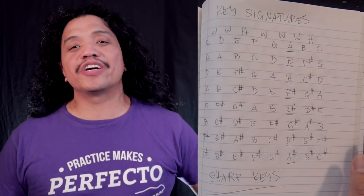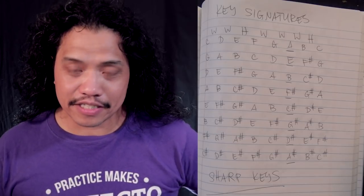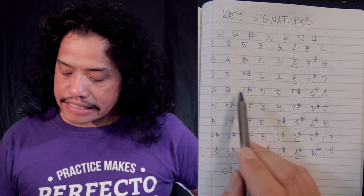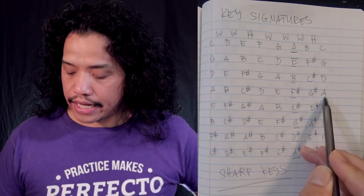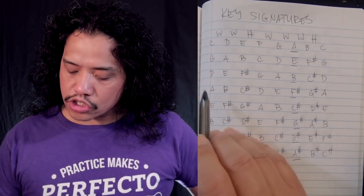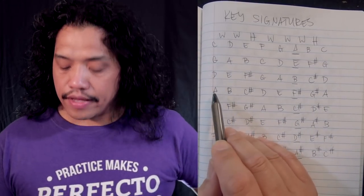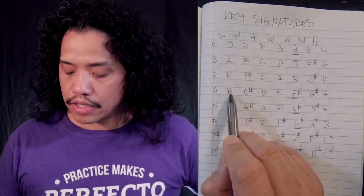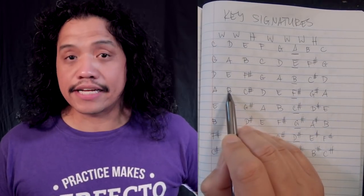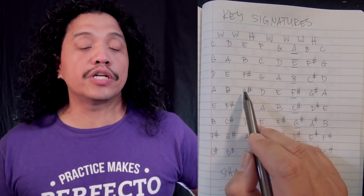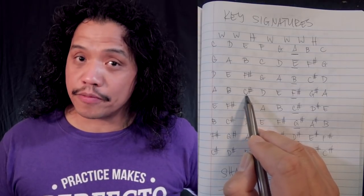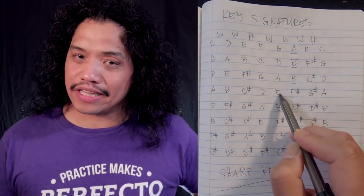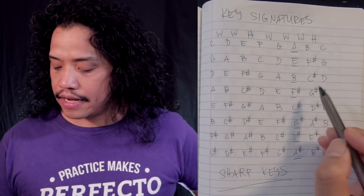Now let's apply the modes to the other key signatures from part two of the series. Let's pick a sharp key — A major. The notes of A major are A, B, C#, D, E, F#, G#, A. If you use this same set of notes, start on A with A as your root, that is A Ionian. If you start on B and treat B as your root using the notes of the A major scale, that is B Dorian. Treating C# as your root gives you C# Phrygian. Using the same approach we also get D Lydian, E Mixolydian, F# Aeolian, and G# Locrian.